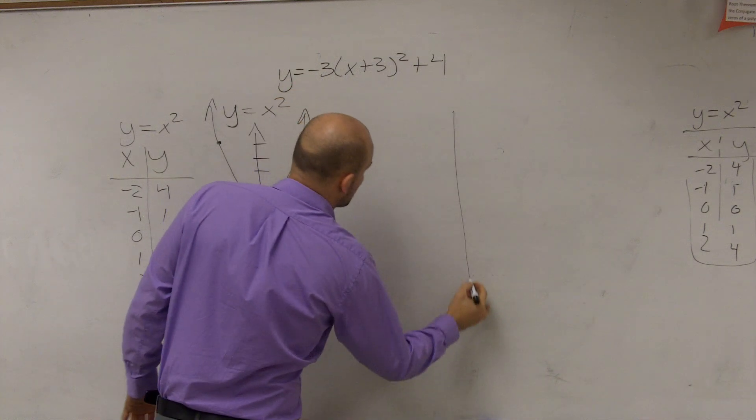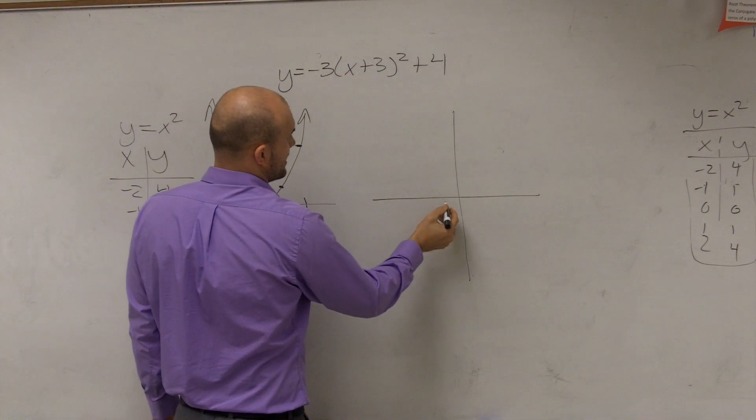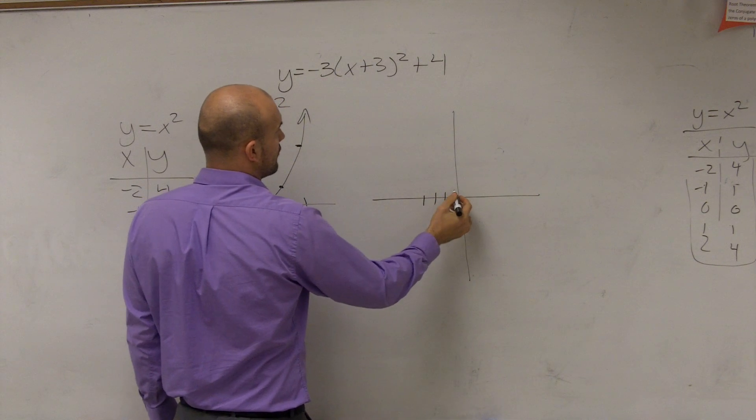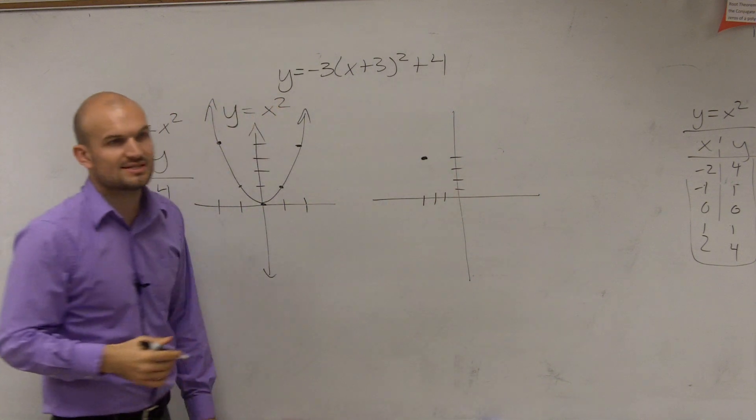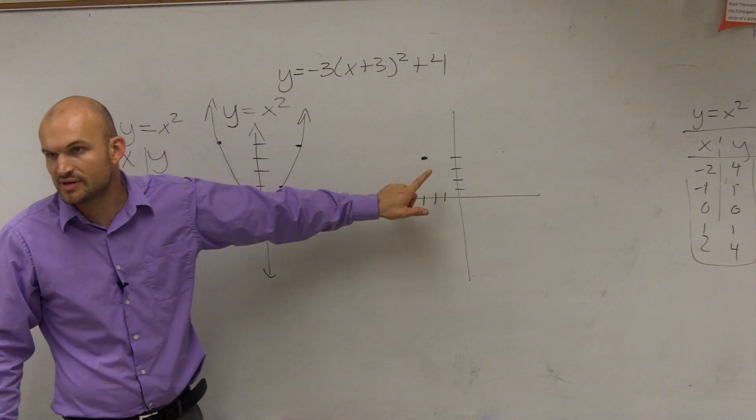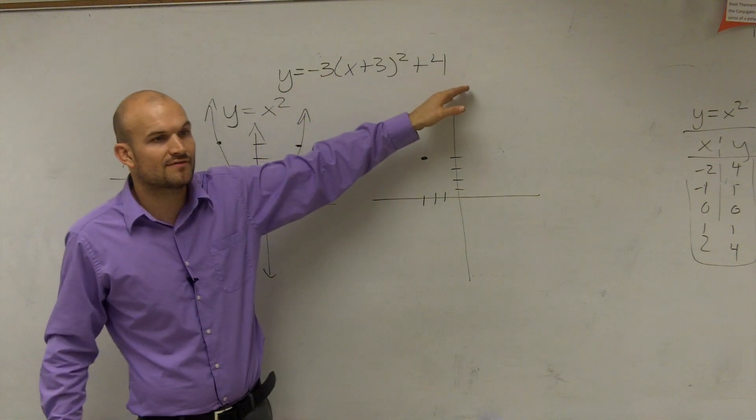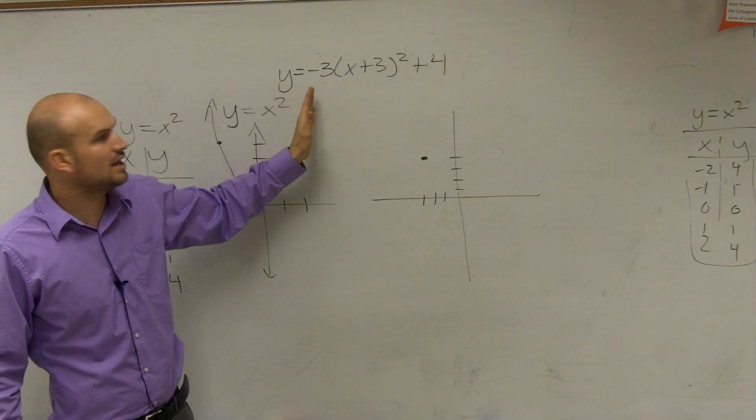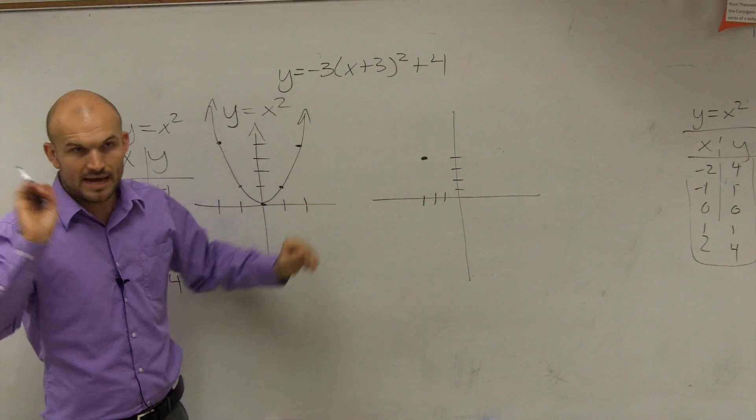So to graph this function, my new point is at negative 3, up 4: 1, 2, 3, 4. Does everybody see that? So I've moved from 0, 0 to negative 3, 4, meaning this has told me to shift my graph 3 units to the left and shift my graph 4 units up.